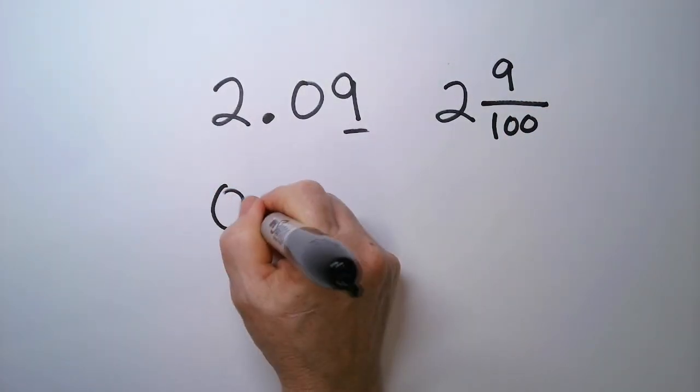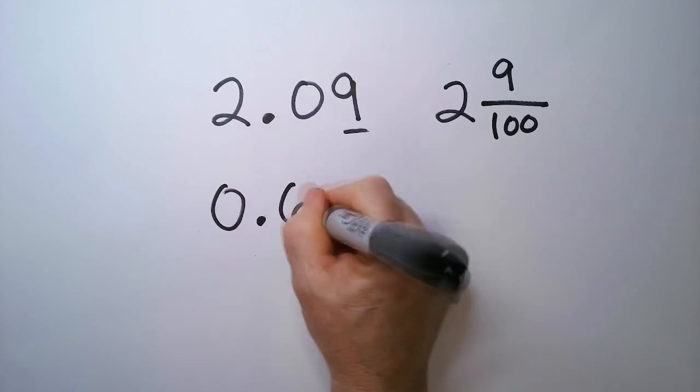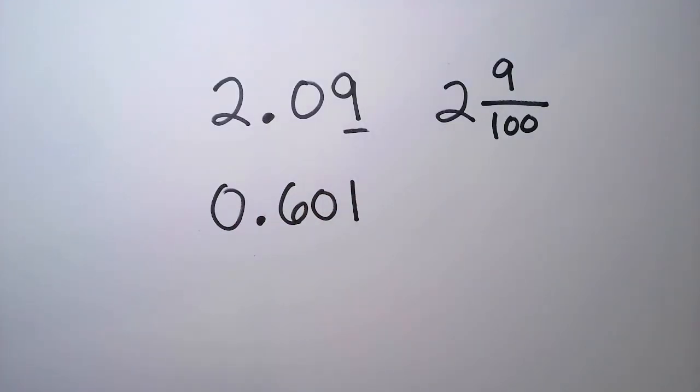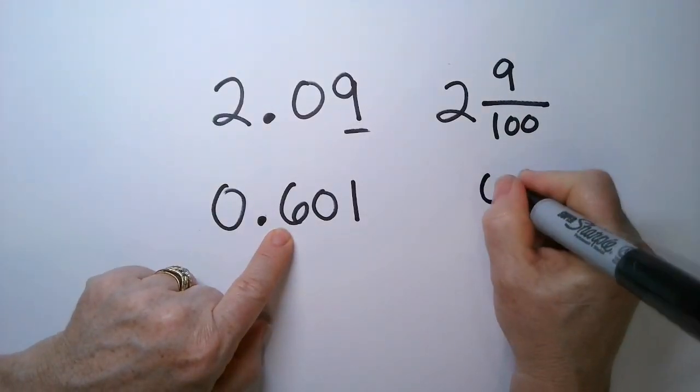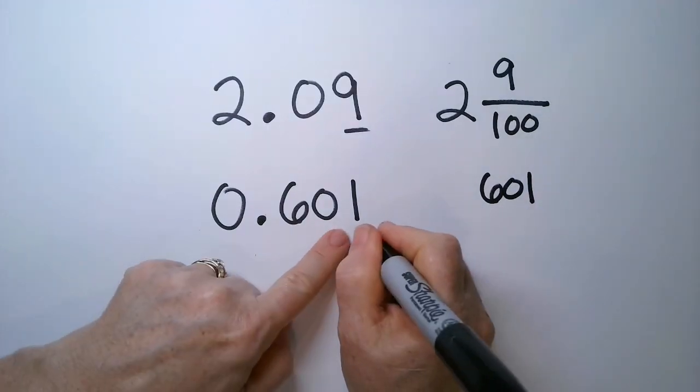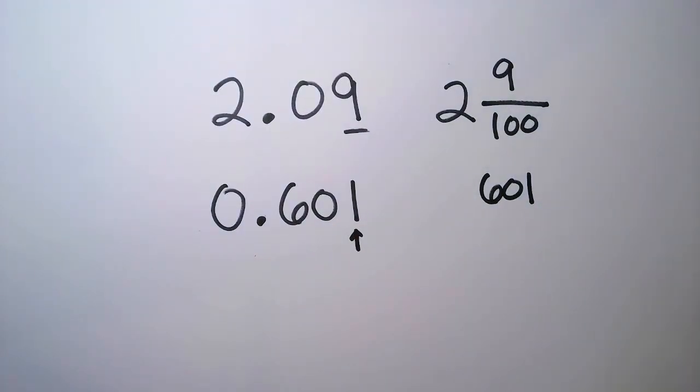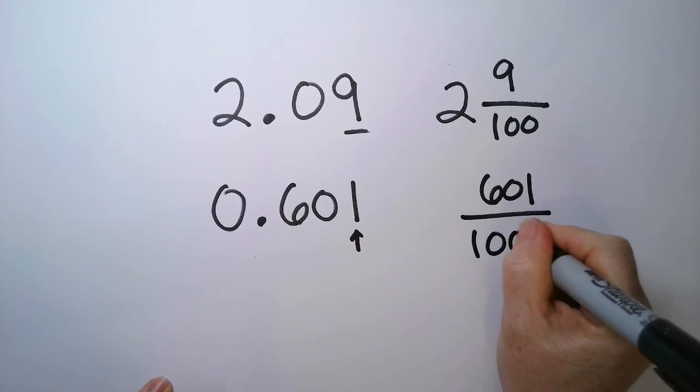How about 0.601? So there's no whole number. And then we have a 601. And the last digit, this is in the thousandths place.